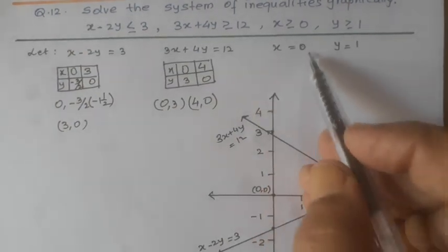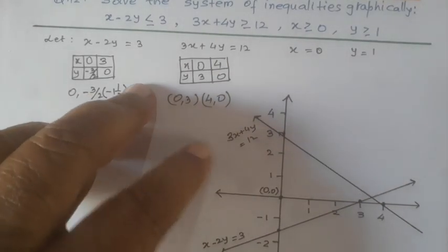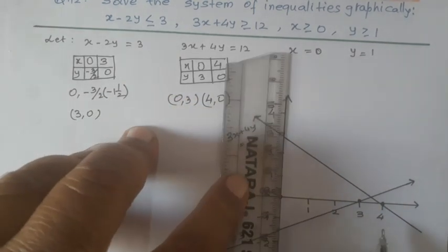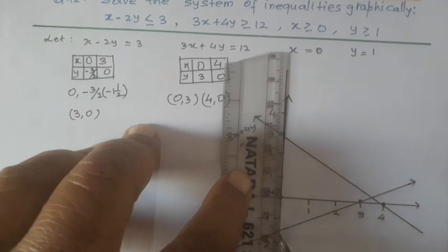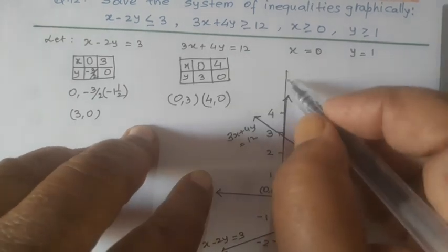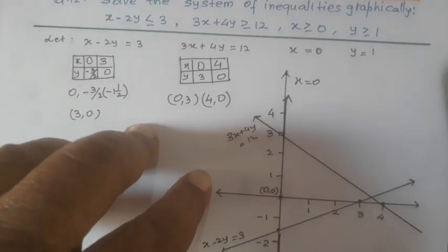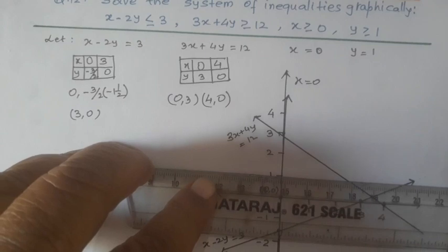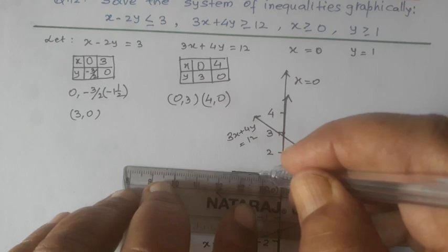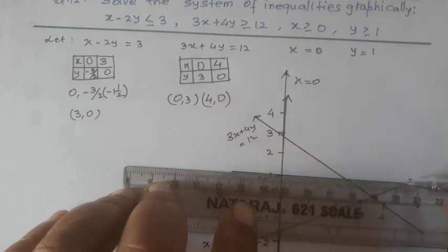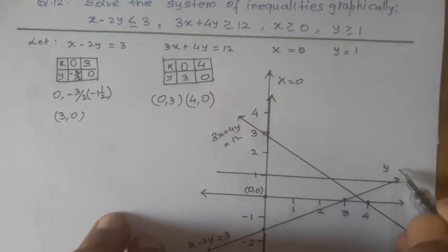As x is equal to 0, we shall draw this line showing x equal to 0. And y is equal to 1, so 1 is here on y-axis. We shall draw a parallel line passing through 1 on y-axis. So, it is y equal to 1.